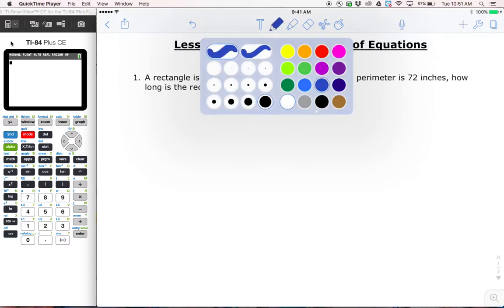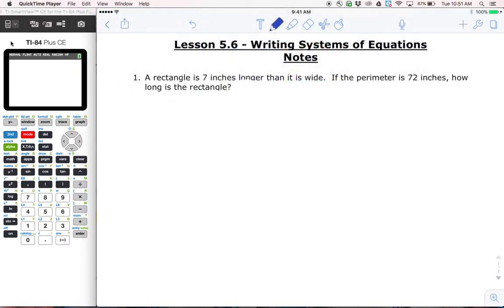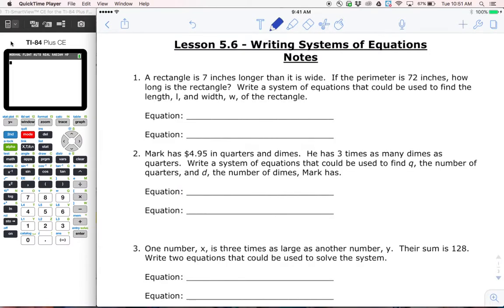You need a system to solve if you have two unknowns that you need to find. I don't know the length, and I also don't know the width. If there are two unknowns, I need two equations. And that's a huge concept in the future. It's not going to tell you to write a system, but you need to write a system in order to get it done.